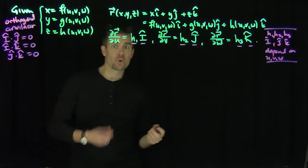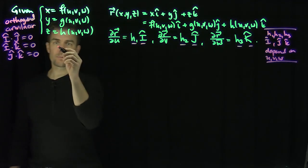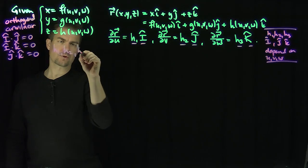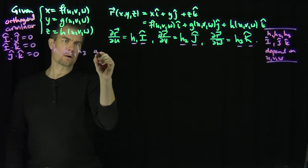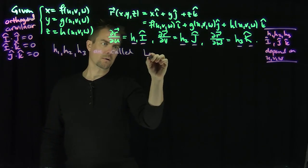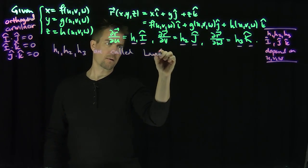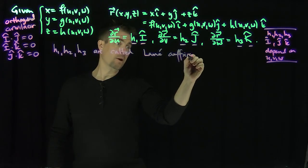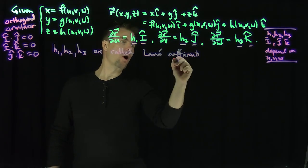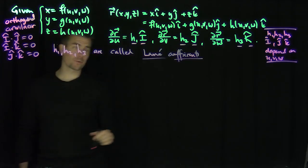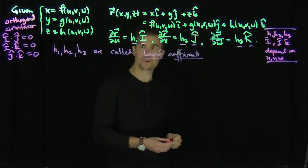These h₁, h₂, h₃ are called the Lamé coefficients of the transformation. These Lamé coefficients come up all the time when computing gradients, Laplacians, and other things in orthogonal curvilinear coordinates.